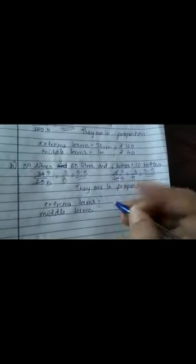Now when they are in proportion, we are supposed to find the extreme terms and the middle terms. Extreme terms are what? The ones, the first and the last. So 39 liters and 10 bottles. And the middle terms are 65 liters and 6 bottles. Easy.